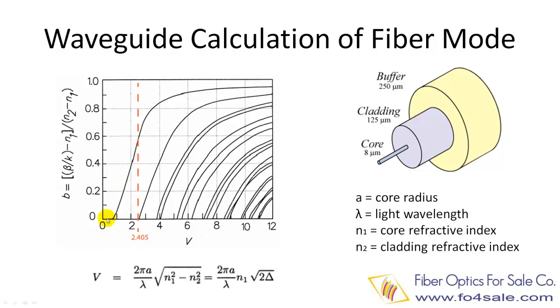This is called a single-mode fiber. When V number is larger than 2.405, several modes can be guided by the fiber. The higher the V number, the larger the number of modes. This is called multimode fiber.